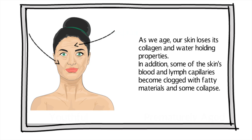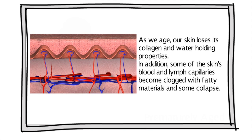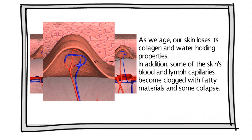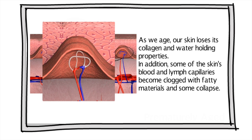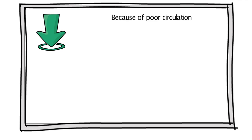As we age, our skin loses its collagen and water-holding properties. In addition, some of the skin's blood and lymph capillaries become clogged with fatty materials and some collapse. Because of poor circulation, the water with dissolved substances does not circulate in your skin as efficiently as it should.